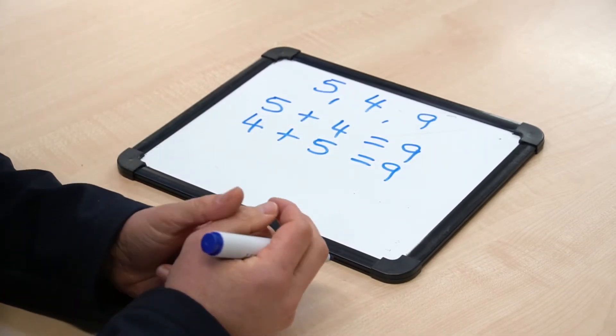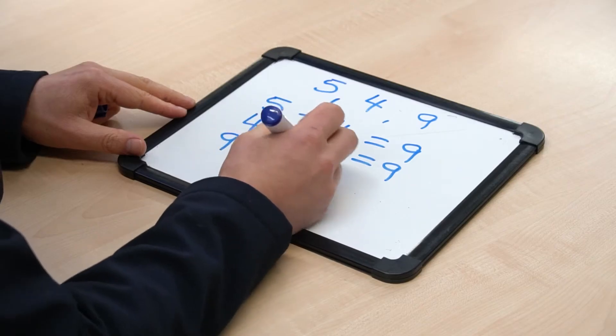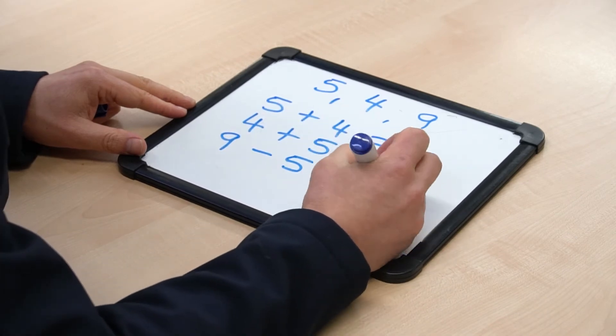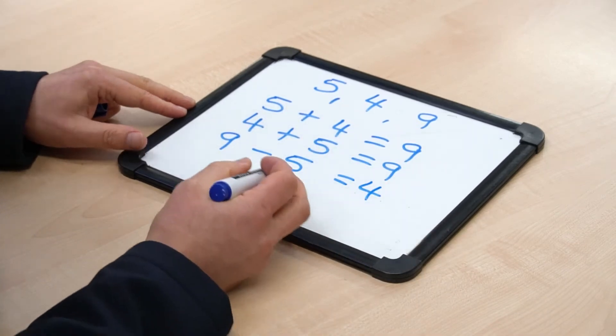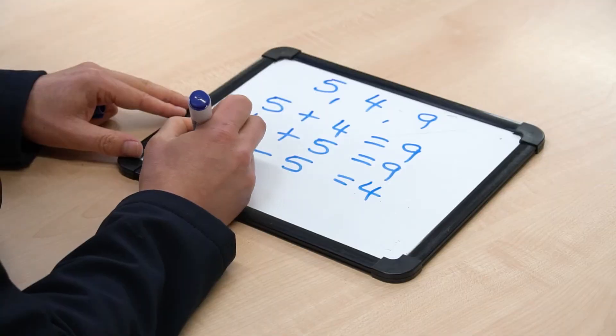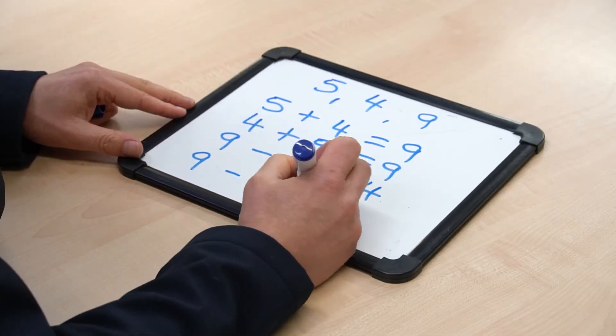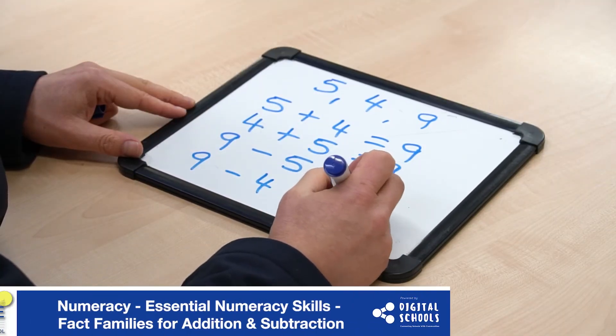We can also make two subtraction problems. With a subtraction problem, the biggest number will be at the start, so we do nine take away five equals four. Then again we can flip the two numbers at the end, so nine take away four equals five.